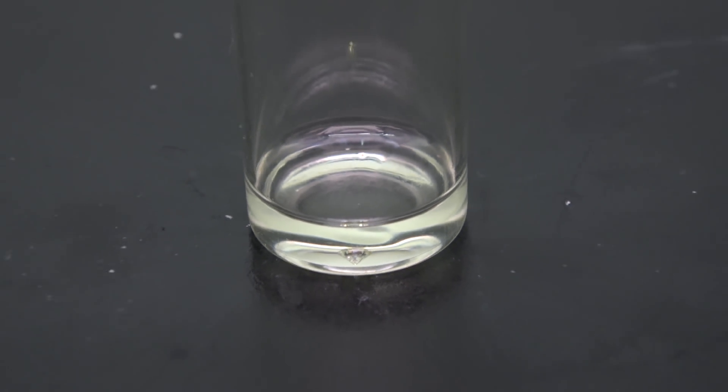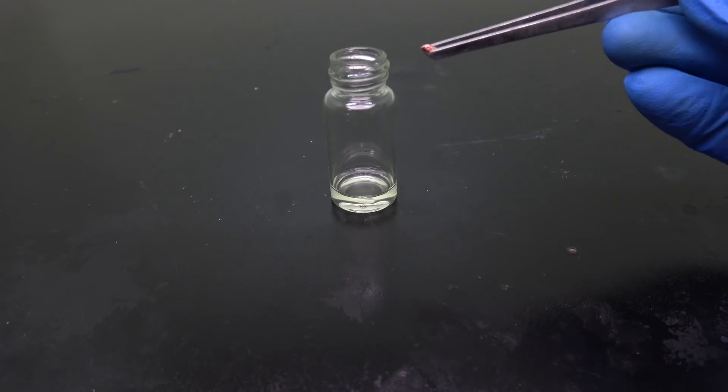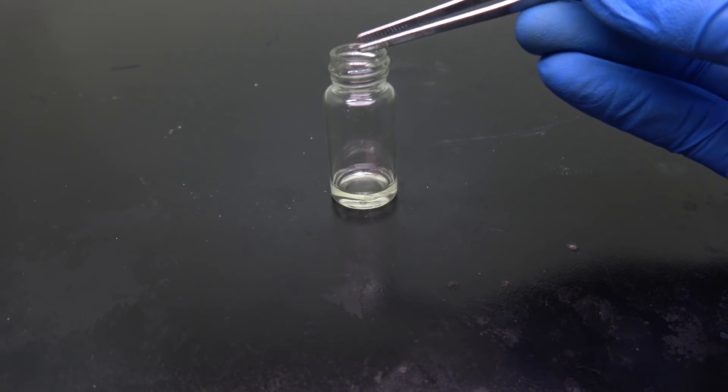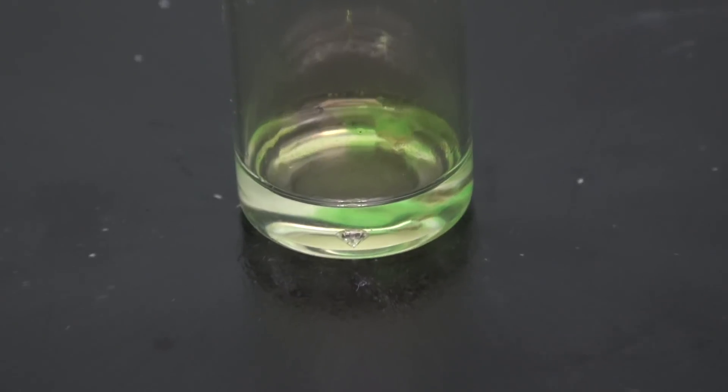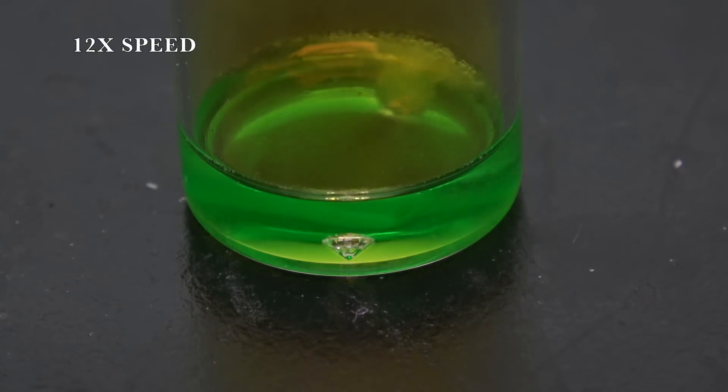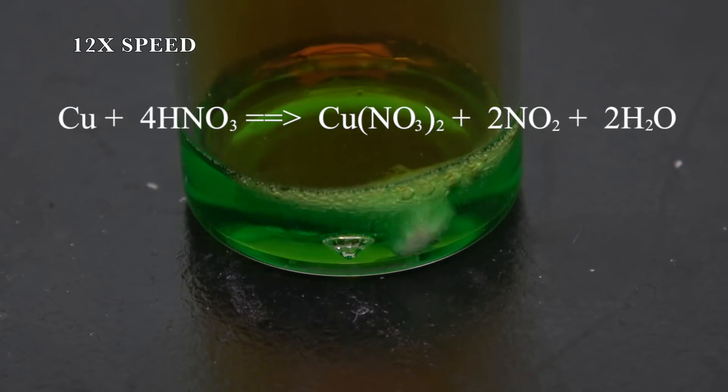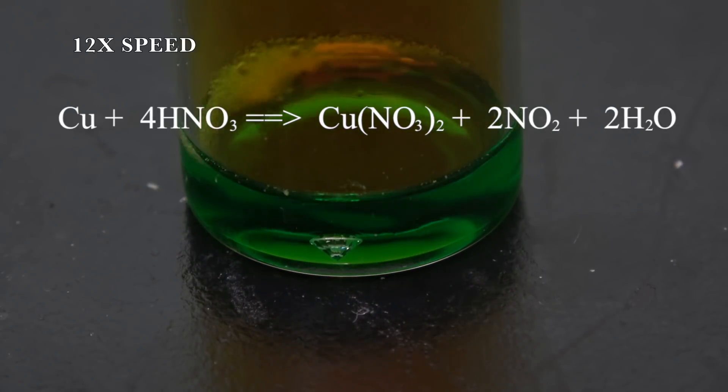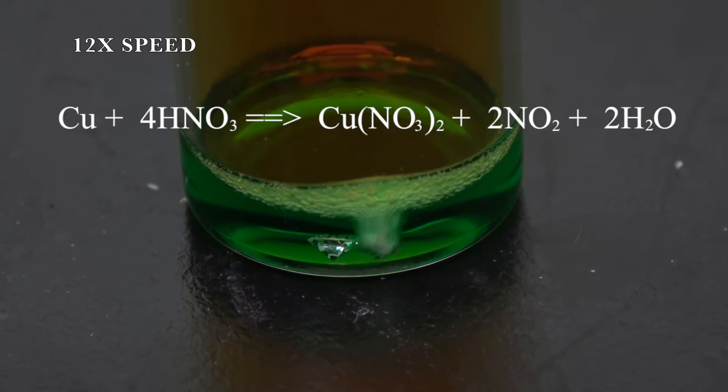Again, just for comparison purposes, I'm going to drop in a piece of copper. Copper violently reacts with nitric acid to form cupric nitrate and nitrogen dioxide, which is the brownish gas as you see here.